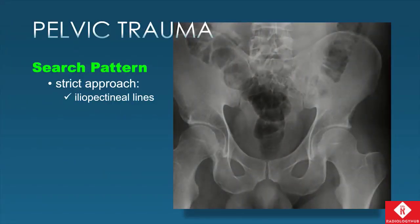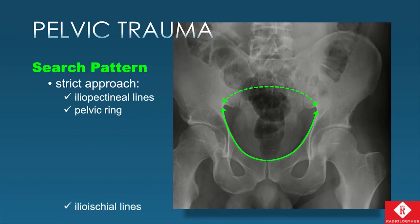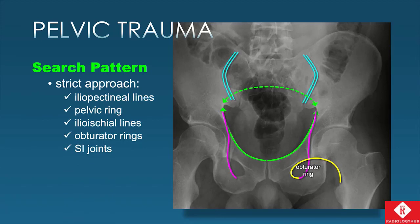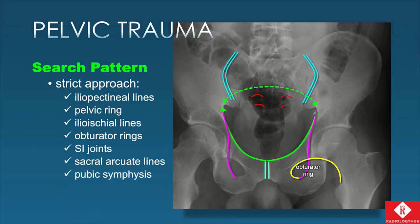The search pattern on the AP view should have a strict approach. We look at the iliopectineal lines bilaterally, follow them posteriorly to see if we have an intact ring for the bony pelvis. We follow the ilio-ischial lines into the obturator foramen and loop around the obturator ring completely into Shenton's line. We want to see smooth, uninterrupted curves. We can see the anterior SI joints more prominently than the posterior SI joints on the AP view, and try to look through the bowel gas at the sacral arcuate lines.